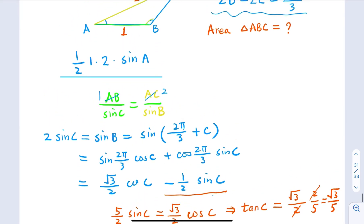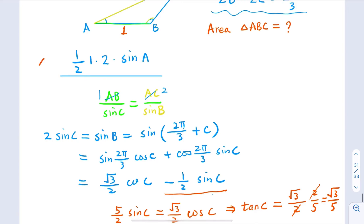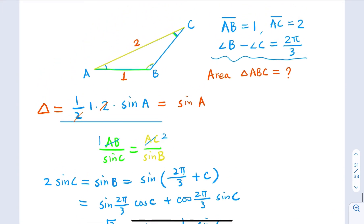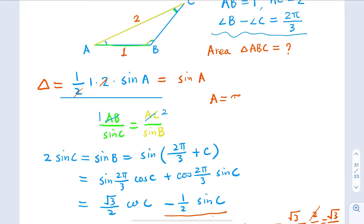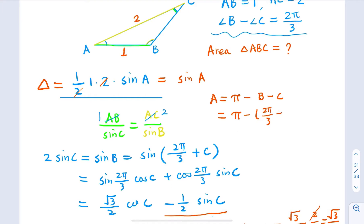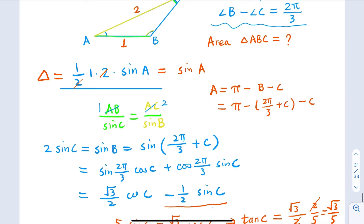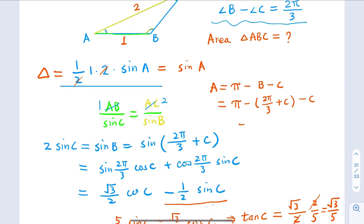Now, how is this related to the area we're trying to find? The area equals sine A, so we need to find sine A. We know A equals π minus B minus C. Since B equals 2π/3 plus C, substituting gives A equals π minus 2π/3 plus C, minus C.